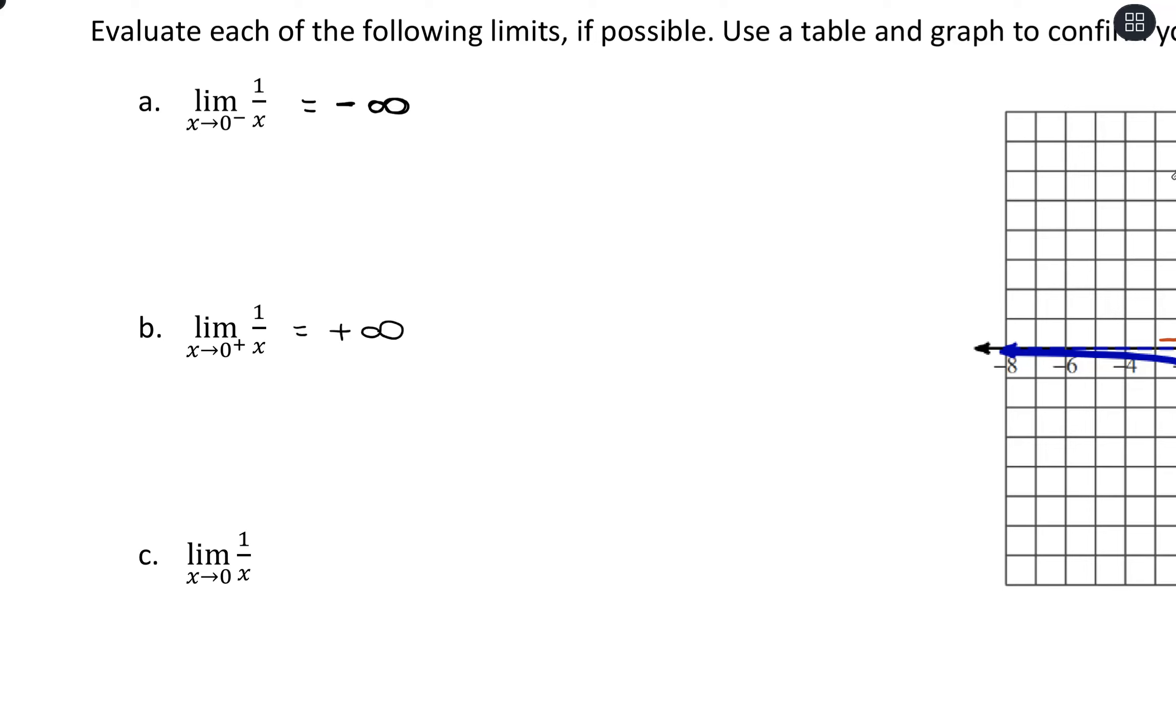Evaluating the two-sided limit, all I need to do is see that we have negative infinity, we have positive infinity. Because we're going in two totally different directions, we would have does not exist for our limit there.